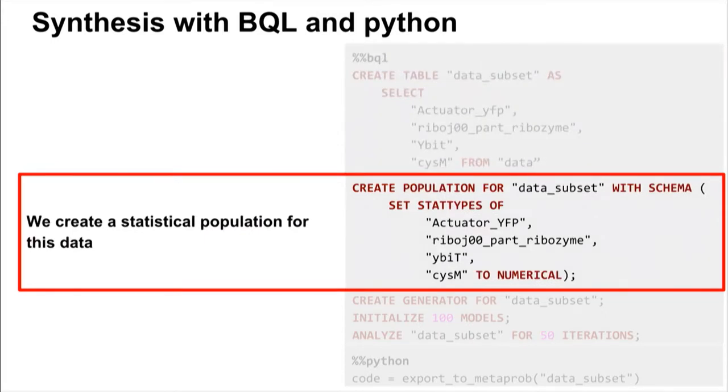In the next step of the synthesis process, we define a statistical population for this data. So that basically means we tell the synthesizer how to model, how to treat the columns in the data table. In this case, we model them all as numerical variables.